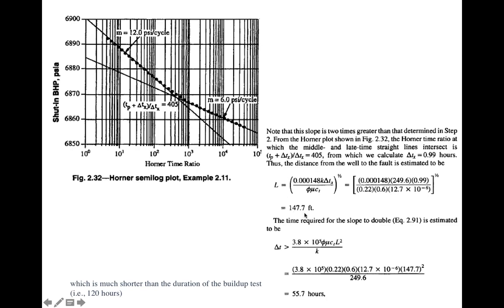The distance l is found to be 147.7 feet. The time required for the slope to double in this case is 55.7 hours, and the total shut-in duration was 120 hours. Since slope doubling occurred well before the end of the buildup test, we can conclude that the boundary is nearby and the permeability is likely higher, making slope doubling detectable within a reasonable buildup period.